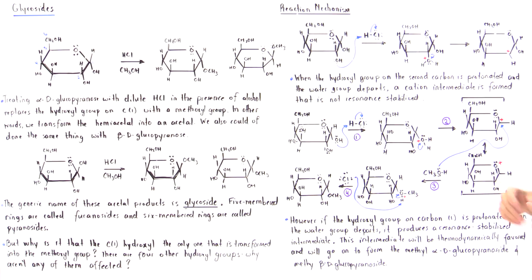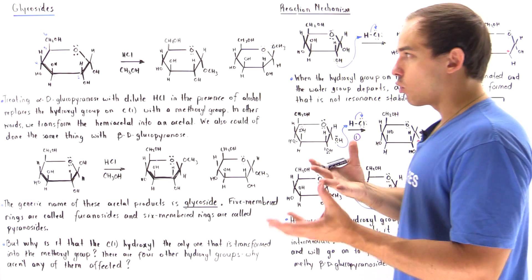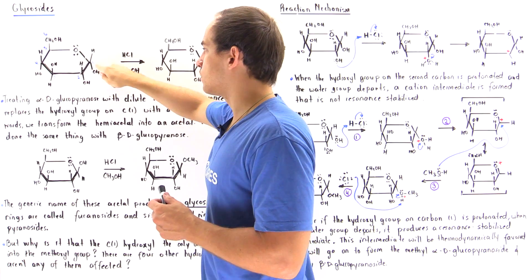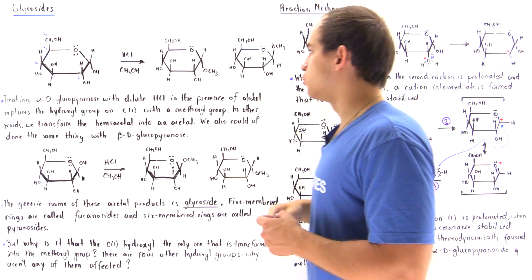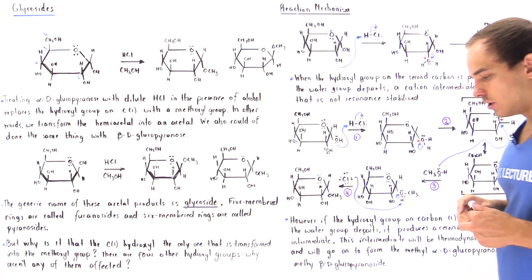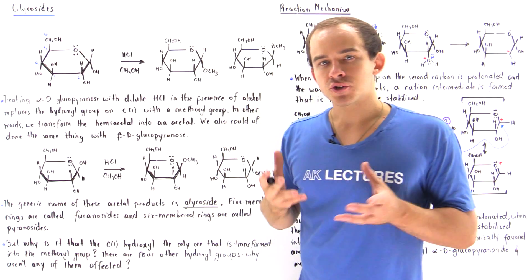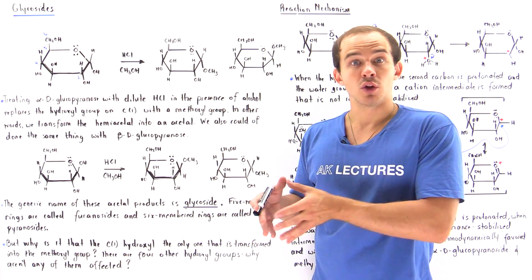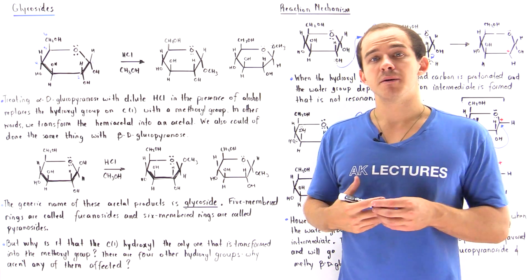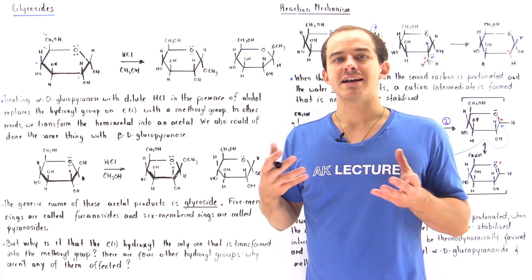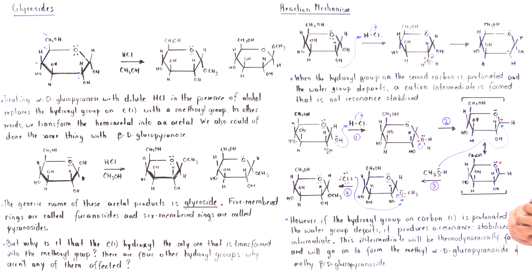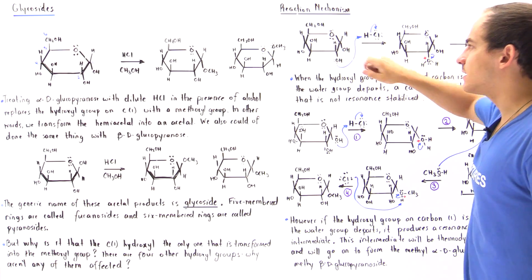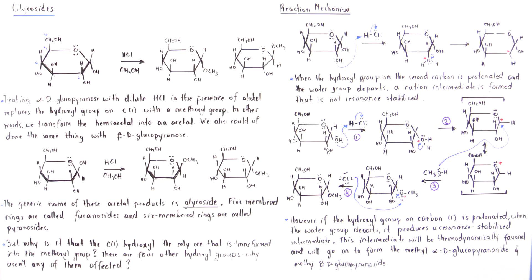Let's look at the reaction mechanism to answer the question we just posed: why is it that only the hydroxyl at C1 is replaced and not the other hydroxy groups? The first two steps are the protonation of a hydroxyl group to form a water molecule — a good leaving group — and then that water molecule departs to form an intermediate cation. Let's suppose we protonate the hydroxyl group on the second carbon and see what type of intermediate is formed.